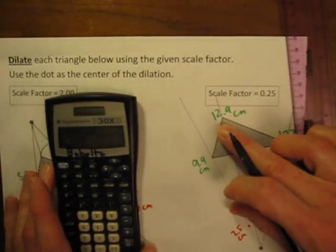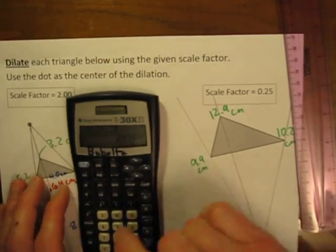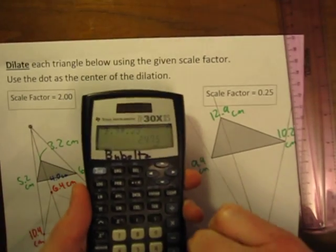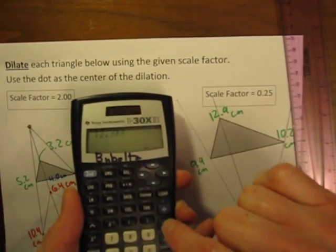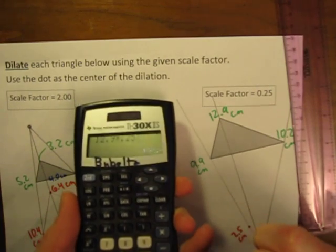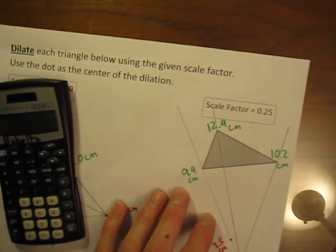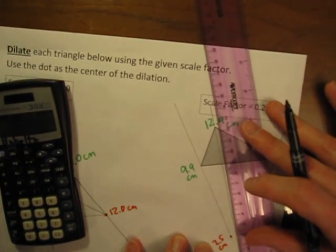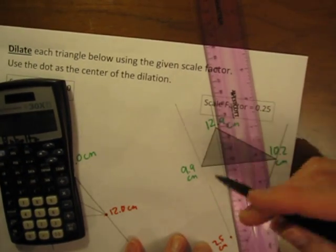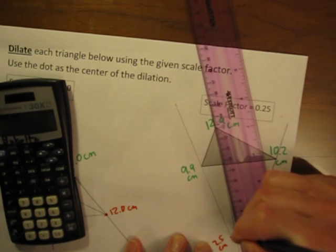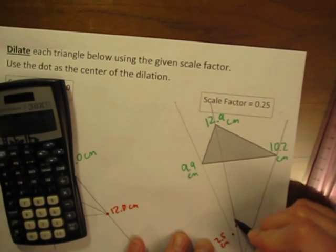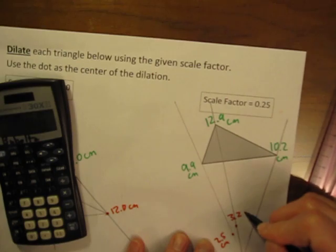Let's do 12.9 times our scale factor, so 12.9 times 0.25 equals 3.2. 3.2, puts me right there, 3.2 cm.